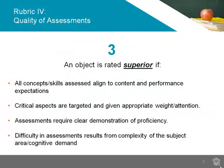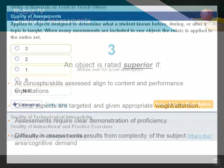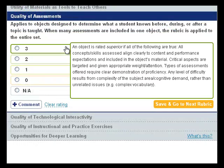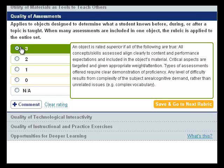An object is superior and should be given a 3 rating if all of the following are true: all concepts and skills assessed align clearly to content and performance expectations included in the object's material; critical aspects are targeted and given appropriate weight and attention; types of assessments offered require clear demonstration of proficiency; and any level of difficulty results from complexity in the subject area or cognitive demand rather than unrelated issues such as complex vocabulary.